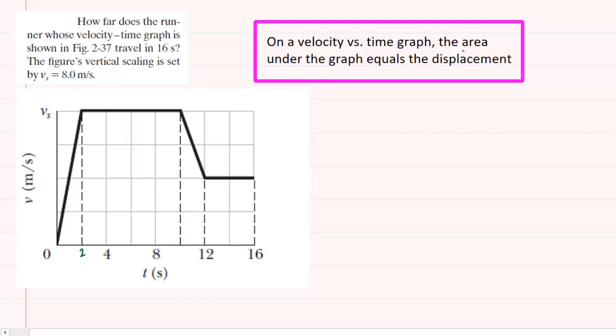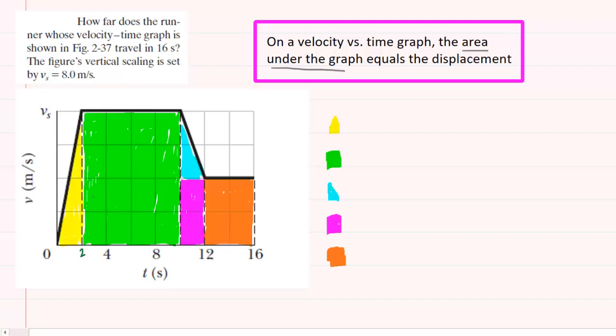So to get a better sense of what we mean by the area under the graph, what we're going to do is carve this graph into five geometrical shapes. So let's take a look at those five shapes. We've colored in those five geometrical shapes, and again, our goal is to find the area of these five shapes. That area will represent the displacement of the runner.